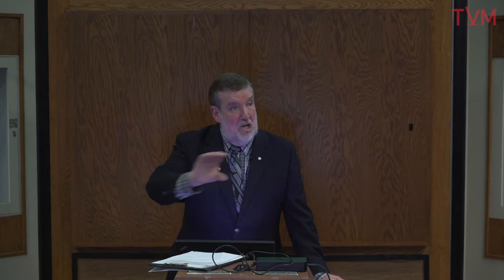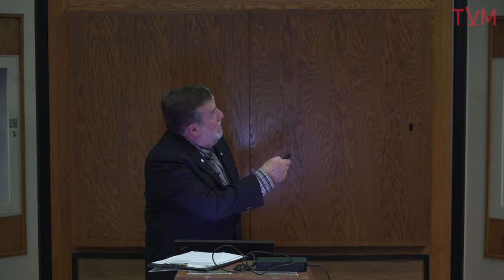If you have only partial preference information, you can still order states and do an analysis — you don't need a complete ordering. We do that separately for each player in the game. Then the reason we call it the Graph Model: each node is a state. One of the players — for example the Ministry of the Environment — can control the movement from one state to another by changing its option selection. Anything you have in a graph you can write in matrices, and if you have matrices you can automatically do mathematical manipulations. Graph theory is sort of right-brain thinking that transfers to mathematics.